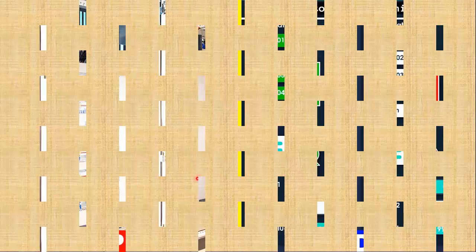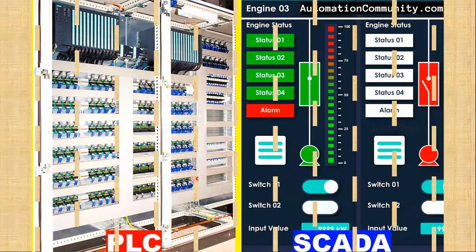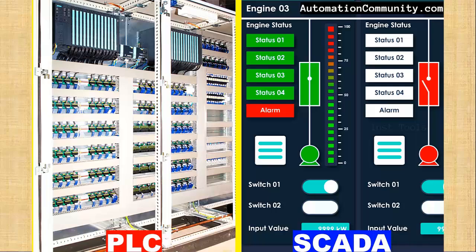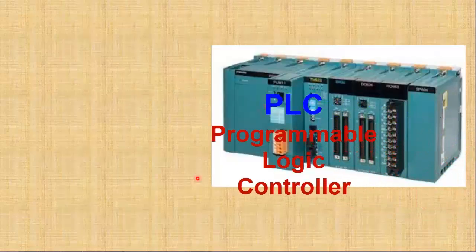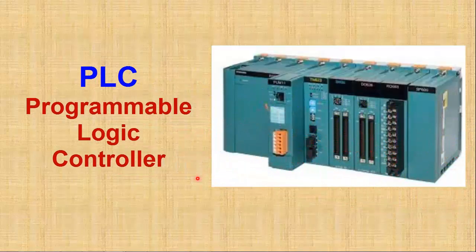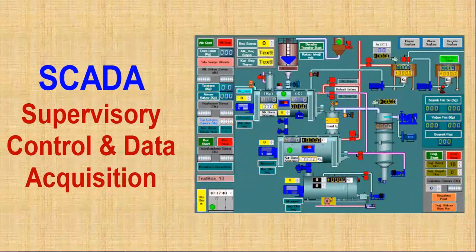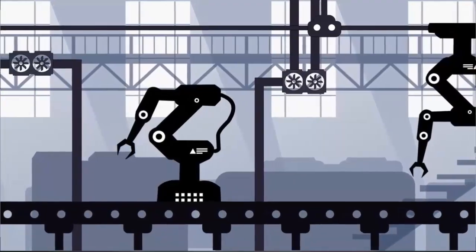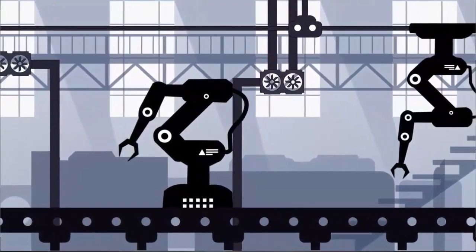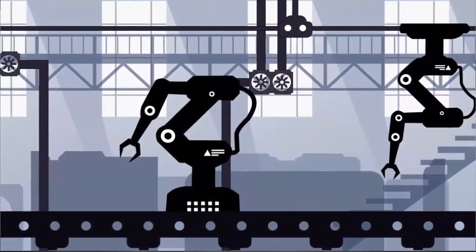Welcome back to Electrical Lectures channel. In today's video, we will discuss some key differences between PLC and SCADA systems. PLC stands for Programmable Logic Controller and SCADA stands for Supervisory Control and Data Acquisition Systems. Both PLC and SCADA are integral components of industrial automation.